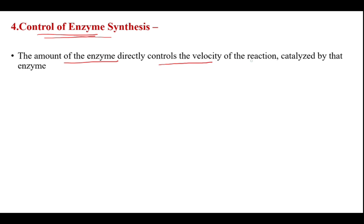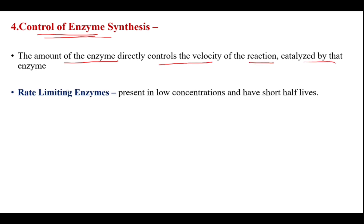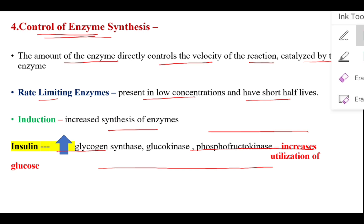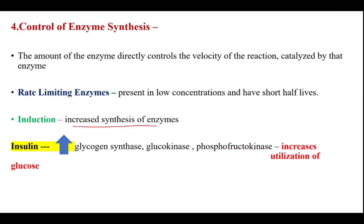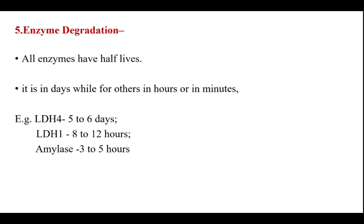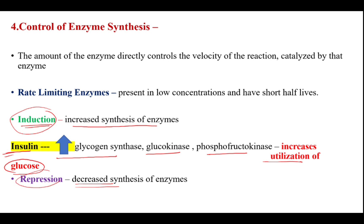Control of enzyme synthesis is also a method of regulating enzyme activity. The amount of enzyme directly controls the velocity of the reaction catalyzed by that enzyme. Rate-limiting enzymes are present in low concentration and have a very short half-life. The rate-limiting step is the slowest or irreversible step in a pathway. Increased synthesis of enzymes is called induction — for example, insulin increases glycogen synthase, glucokinase, and phosphofructokinase, ultimately increasing glucose utilization. Decreased synthesis of enzymes is called repression.